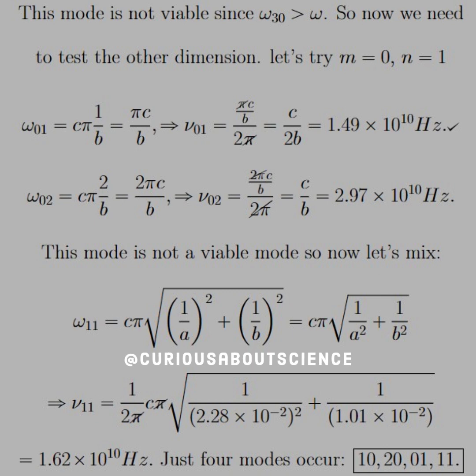Now we need to try the mixed coordinates. First mix would be 1,1. That gives us cπ square root of 1 over a² plus 1 over b². Divide by 2π to get ν, and we see that the π's cancel. Once everything is computed, we see that we have 1.62 times 10¹⁰. If we go to 0,2, that's going to be too big of a frequency, so 1,2 won't work. Since this is really close to the driving frequency, a quick check will show that 2,1 can't work either. So just four modes can occur: 1,0; 2,0; 0,1; and 1,1.